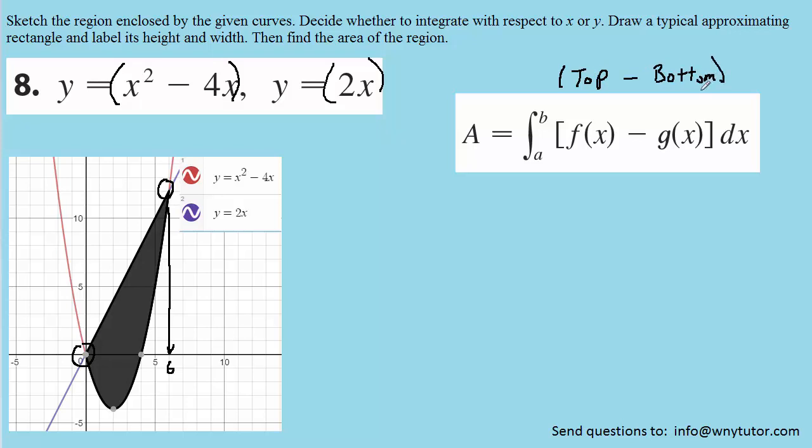And if you go back and look at the graph, you can see that the top function, where the gray region is, would be the function that was colored in purple. And that function was indeed 2x. So when we set up our integral, the top function will be 2x. And then we're going to subtract the bottom function. And we can see that the bottom function, which we can kind of trace right here, was the red curve. And the red curve was the parabola x squared minus 4x.